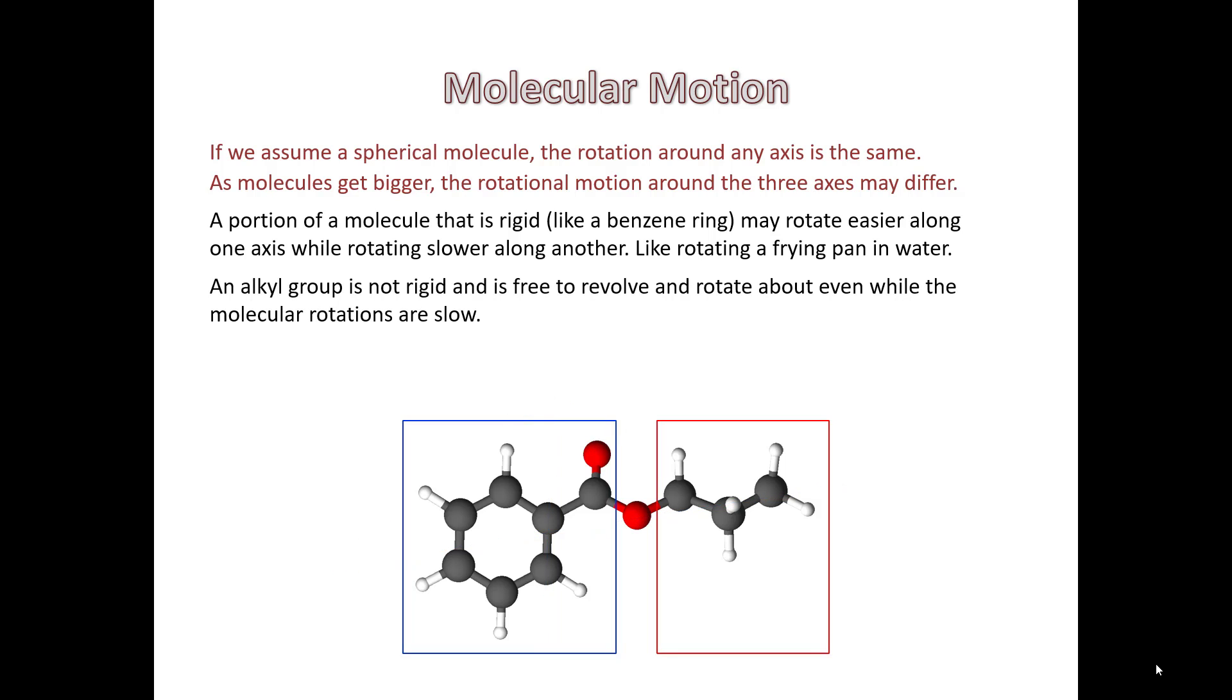On the other hand, an alkyl group, which is not rigid, is free to revolve and rotate even while the molecular motions are slow. This is going to make this part of the molecule relax a little bit faster, possibly. This can flop about. Even while the motion of the larger molecule is slow, this will be a little bit faster.